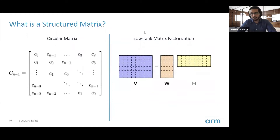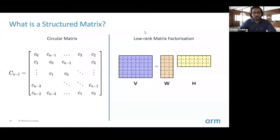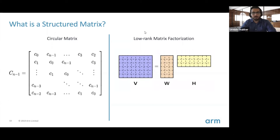A structured matrix is any matrix that can be expressed using fewer parameters than would ideally be required. If your matrix is of dimension n×n, you generally require n² parameters to describe it. In a circulant matrix, each row is the left shift of the previous row, so a matrix that should require n² parameters only requires n parameters — all you need is one row, and you can left-shift it to generate the entire matrix.